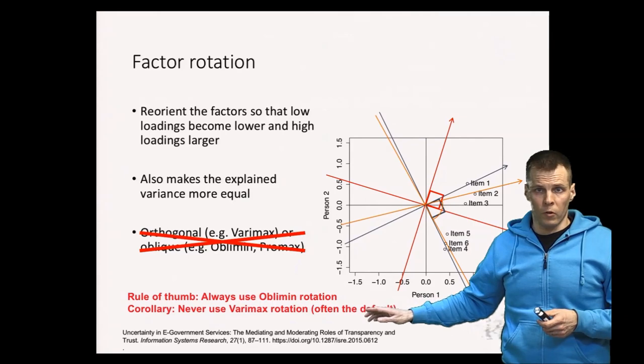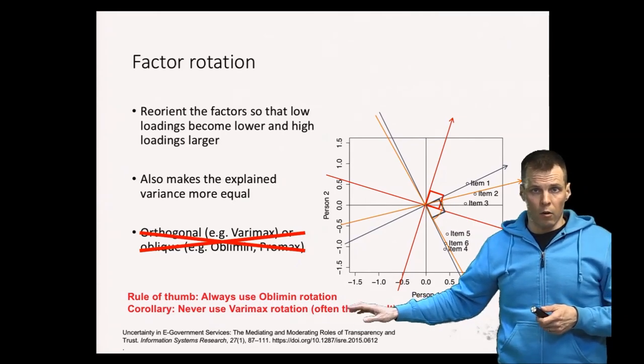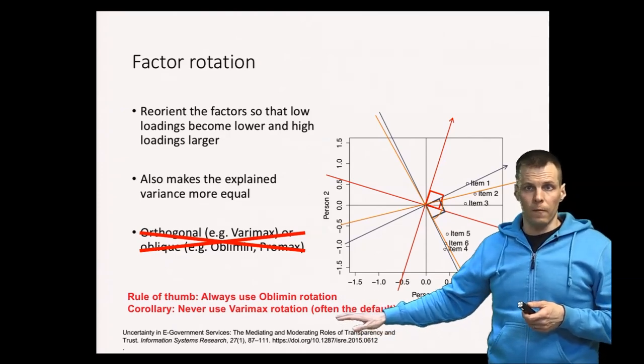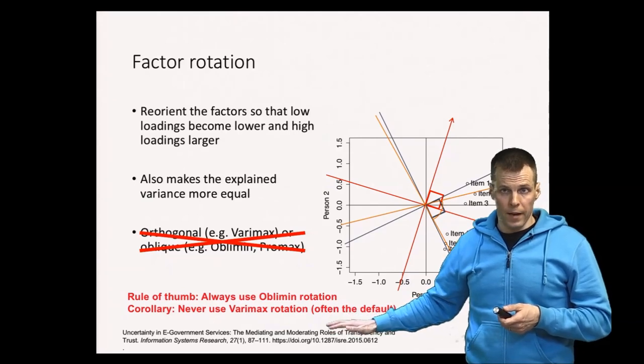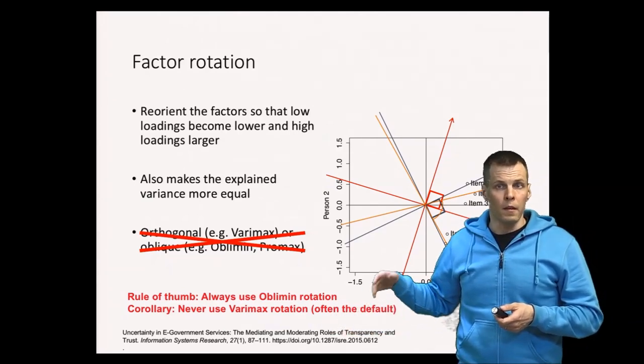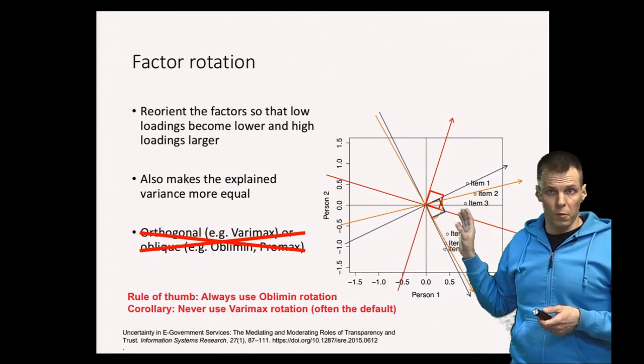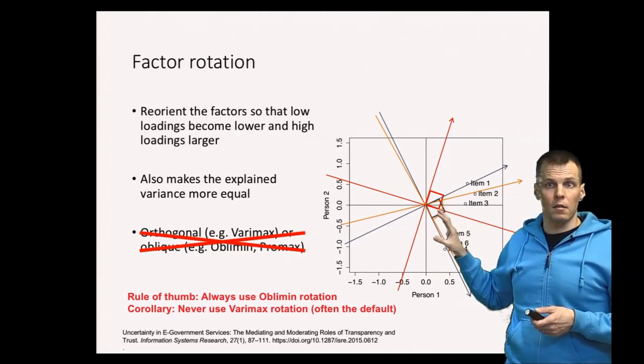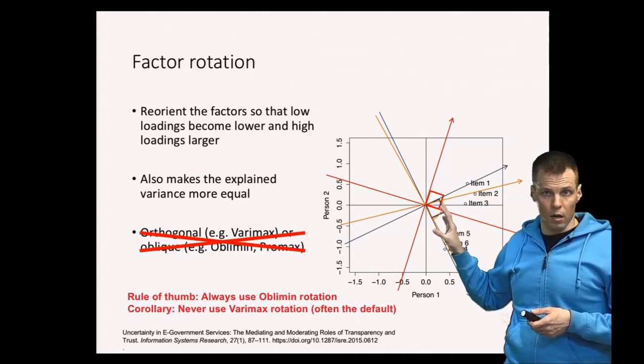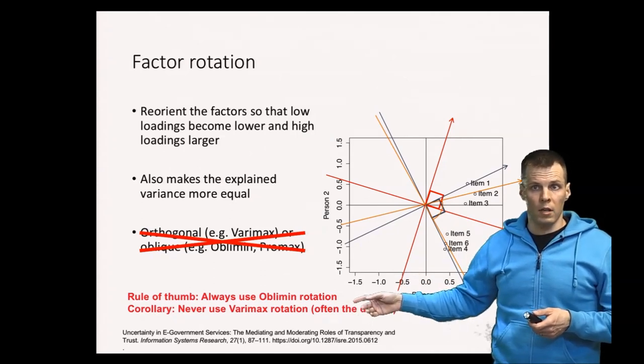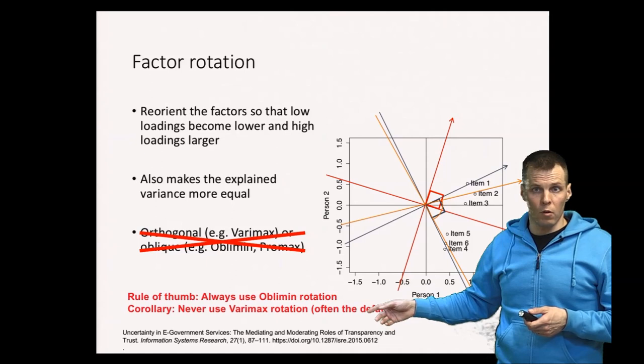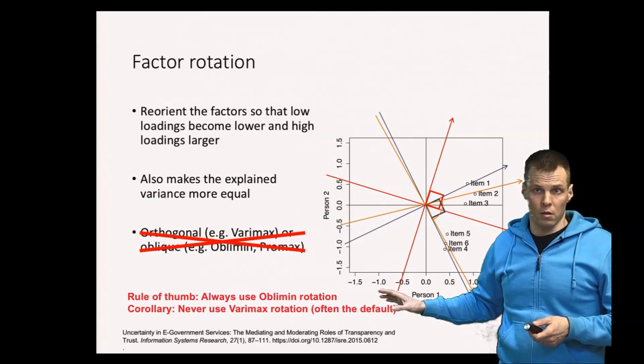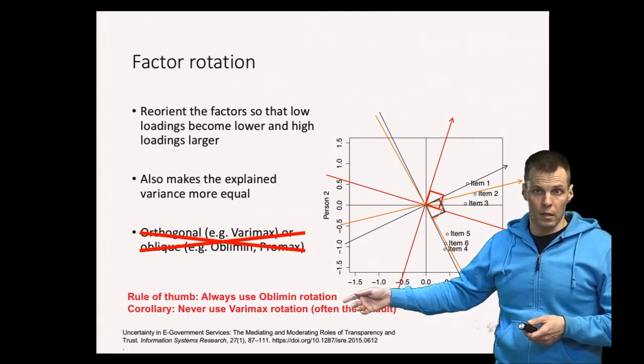Varimax rotation is often the default and it's an orthogonal rotation so you should never use that one. The reason why varimax is the default is because of history. Factor analysis has decades of history and when factor analysis was introduced we really didn't have computers so people were doing hand calculations, and the varimax rotation is much simpler to calculate than the oblimin rotation. But nowadays the computer will do both of these for you instantaneously, so the amount of computation is a non-issue. You should really go with the direct oblimin instead of anything else.